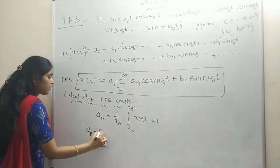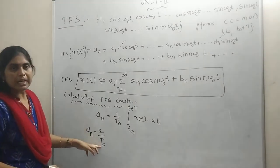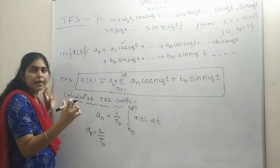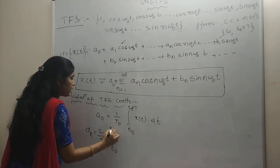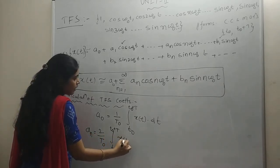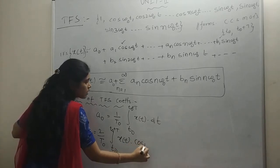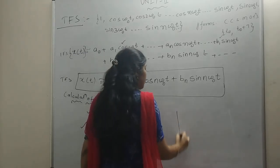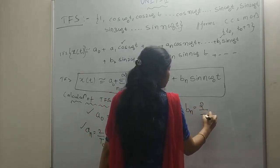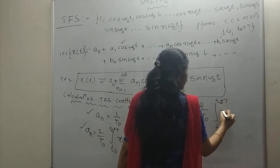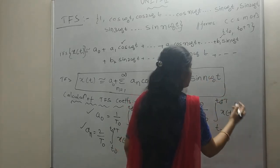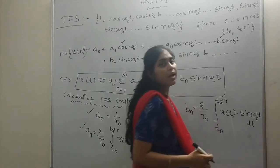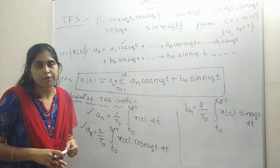The next TFS coefficient: aₙ = (2/T₀) × integral from t₀ to t₀+T of x(t)·cos(nω₀t) dt. Note that the fundamental frequency is represented as T₀; in some textbooks it may be written as 2/T, where capital T represents the fundamental time period of the periodic signal. Similarly, the formula for bₙ is: bₙ = (2/T₀) × integral from t₀ to t₀+T of x(t)·sin(nω₀t) dt. These are the formulas to calculate the trigonometric Fourier series coefficients.